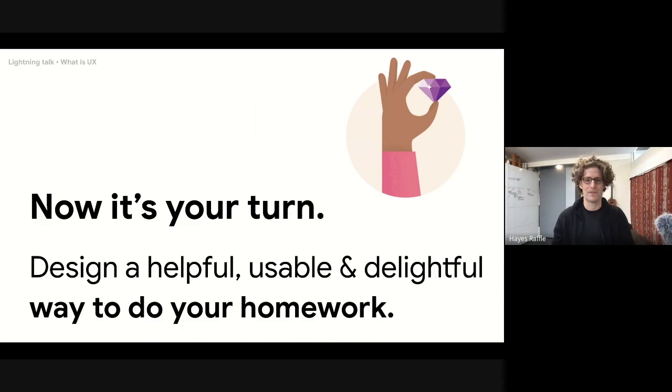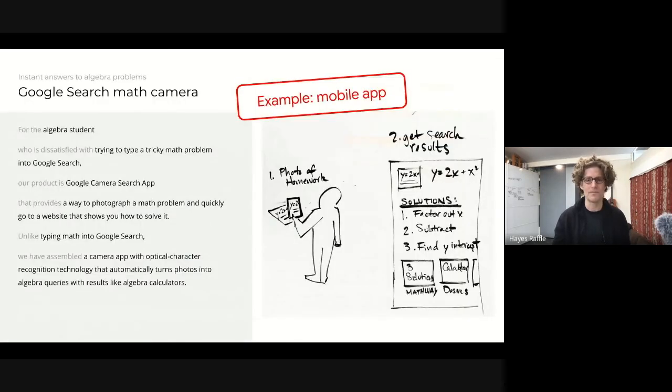So oftentimes when we're starting out, we use very simple product thinking templates. This is a product thinking template that I used to come up with two examples of ways to do your homework better. These are based on existing product concepts, just to give you an idea of how the template works. So what we try to do with this template is identify the user, the problem that they have, the alternatives, existing solutions and how our solution will work better, and a little bit of detail about what the solution is.